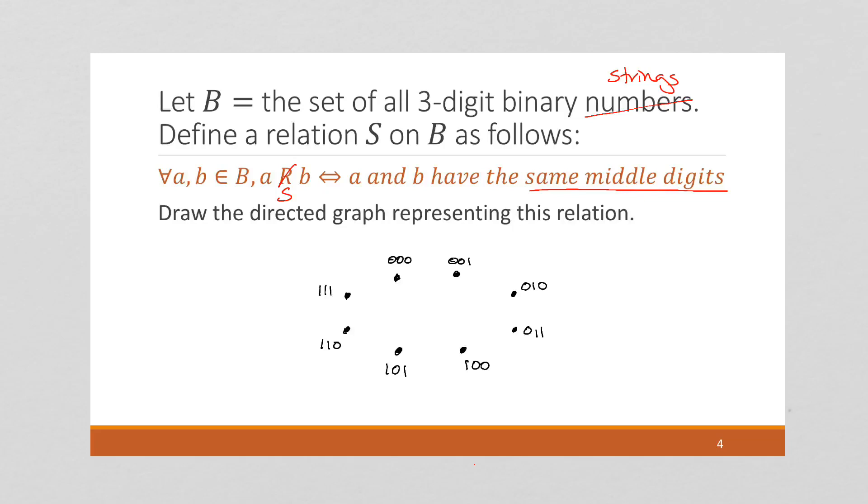now each three-digit binary string has the same middle element of itself. So, these all have self-loops. This is not, not all relations have self-loops, just the ones we've been doing.